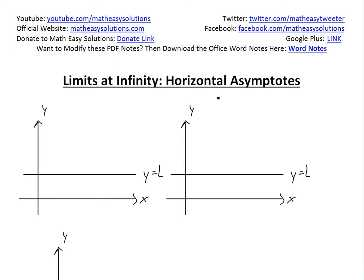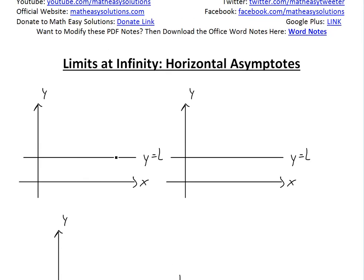Now before I get to the definition of horizontal asymptote, I just want to illustrate it graphically. If you have a line like this, y equals L, I'm going to have three scenarios of limits to infinity and horizontal asymptotes.